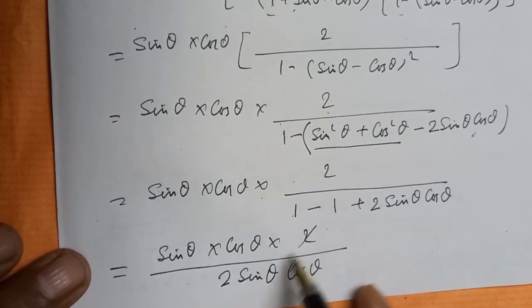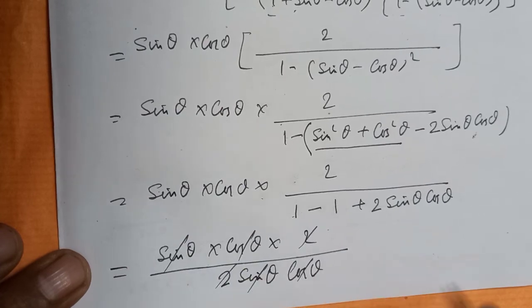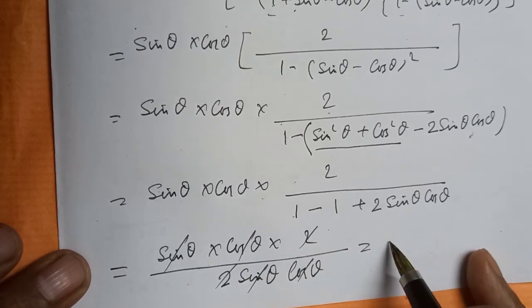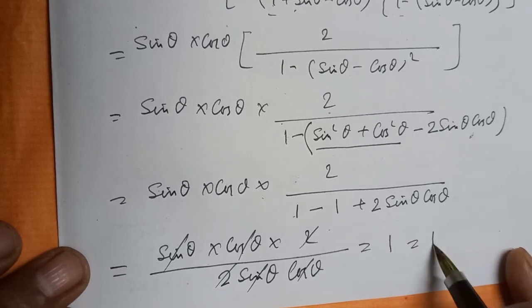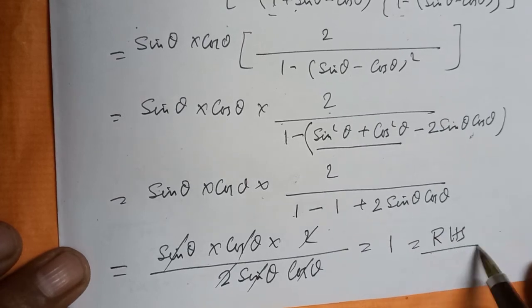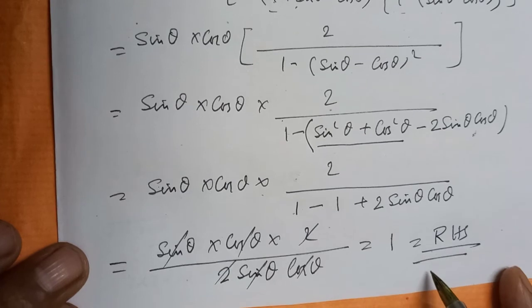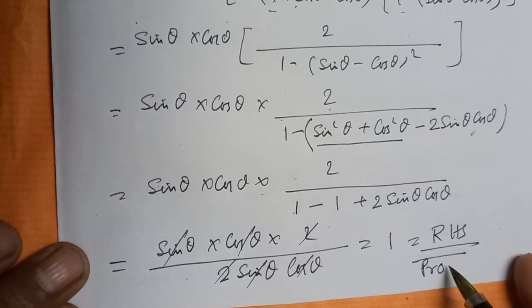The 2 cancels with 2, sinθ cancels with sinθ, and cosθ cancels with cosθ. Hence, we get 1, which equals the RHS. Hence proved.